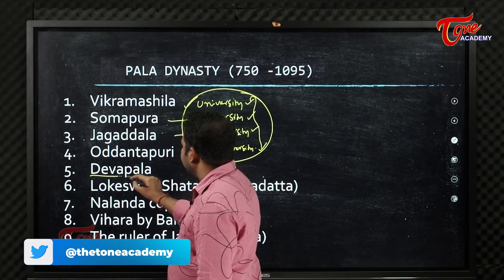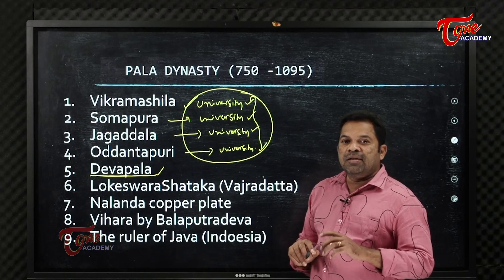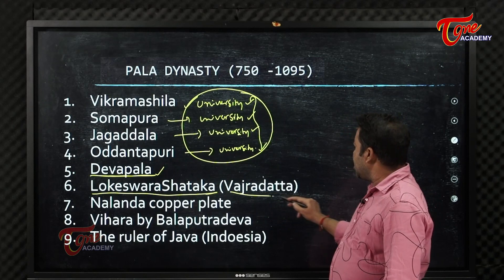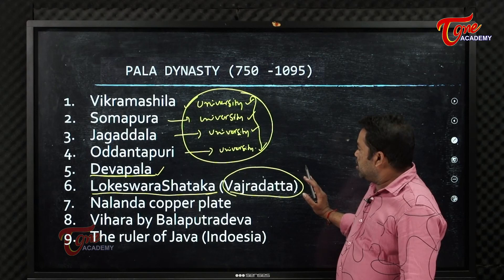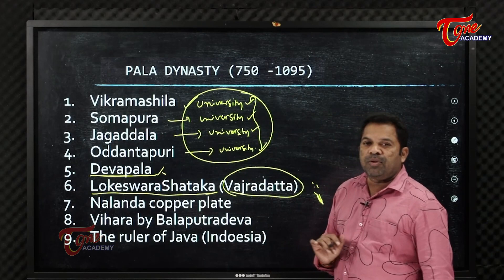After Dharmapala, Devapala came to power. During Devapala's time, an important figure was the Buddhist poet who wrote Lokeshvarashataka, a book of verse. This scholar was patronized by Devapala.